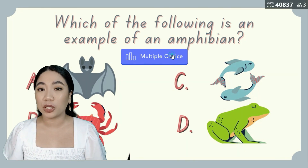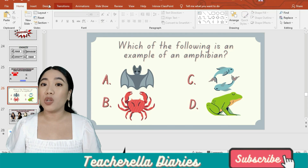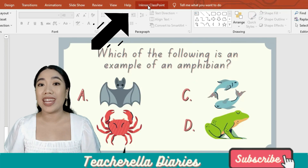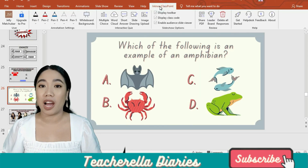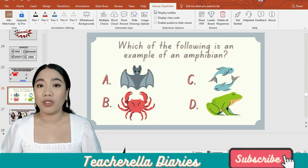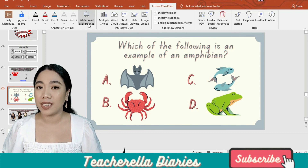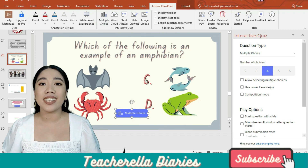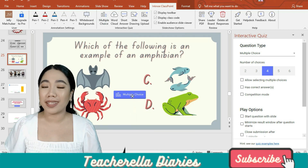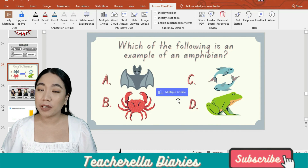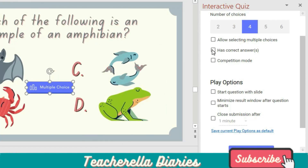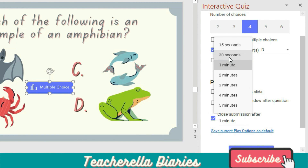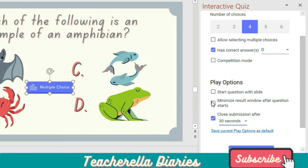How can we add a multiple choice question button? In the upper part of your file, you will see an additional tab for ClassPoint. Click that tab and you'll see more options. Right in the middle are the buttons for question types. Click multiple choice and instantly a multiple choice button will appear on your slide. When we click this, you will see some settings on the sidebar. I'm just going to set the right answer and set the time. Now you're good to go.